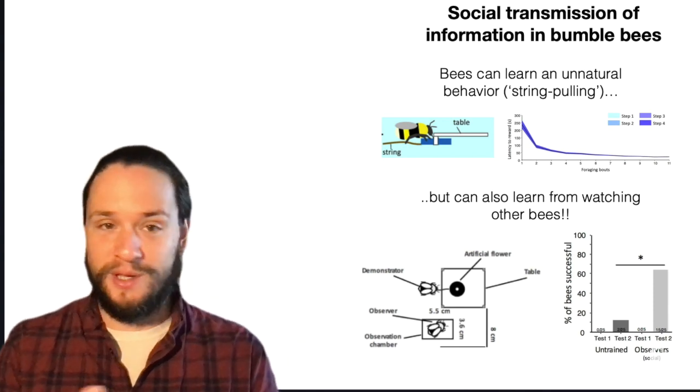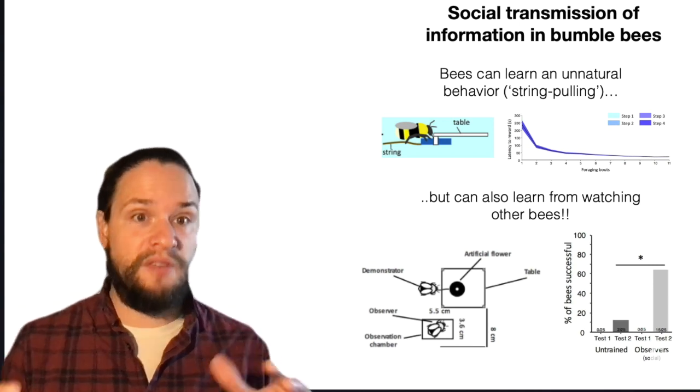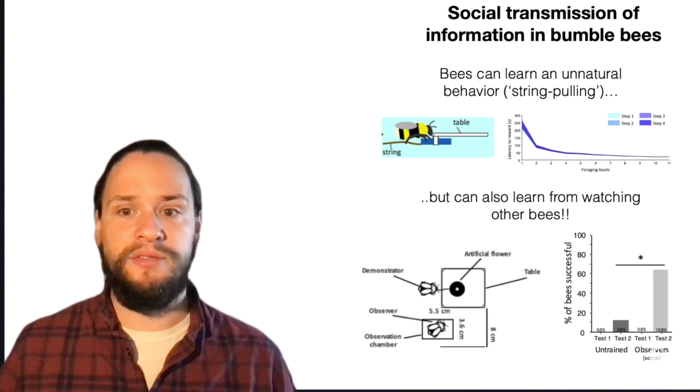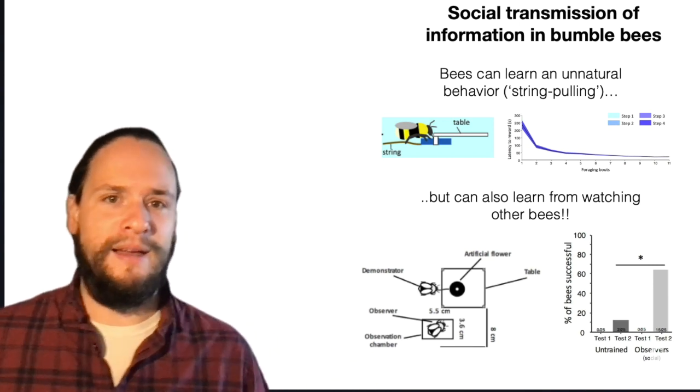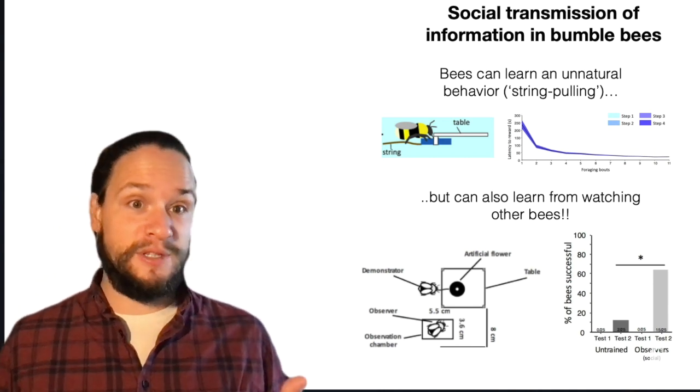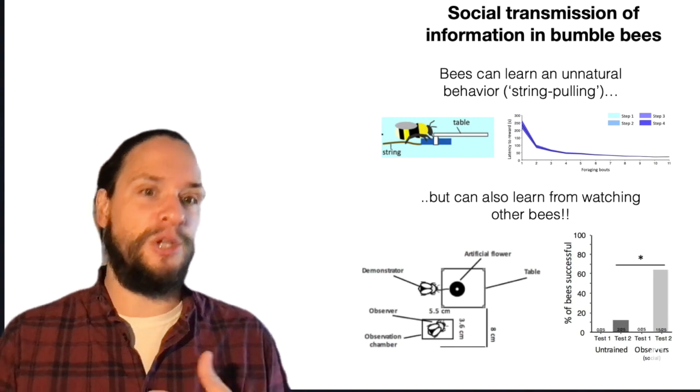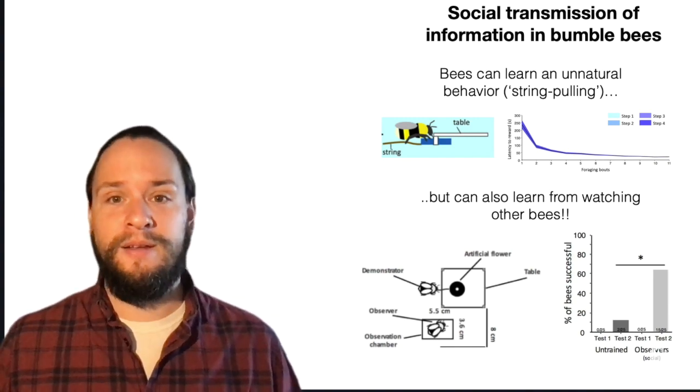And this doesn't work if, you know, it's a human or some other way of manipulating that. It's really specific to paying attention to the motor patterns of fellow bumblebees and what they're doing and then, yeah, these bees can learn this. So not only can they learn strange behaviors, but they can socially and sort of culturally transmit those behaviors to other bees within a colony.